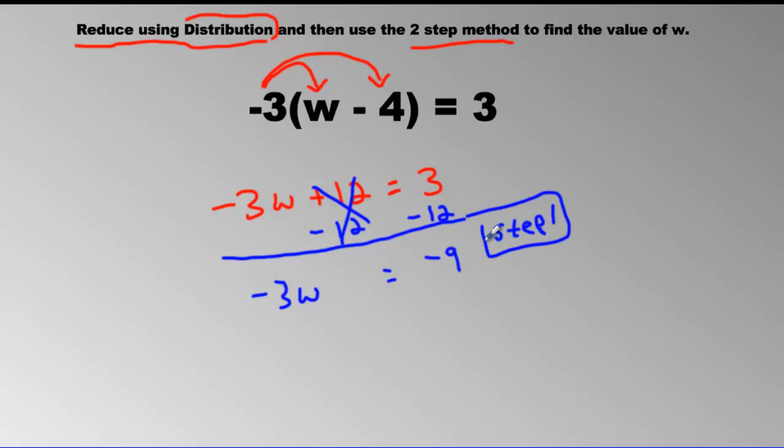Step 1. It's two steps, right? So now we're going to move on to the second step, which is divide by negative 3. Because these are being multiplied. So that cancels the negative and the 3 to make 1 W, which is just W. And then divide this side by negative 3 to make a positive 3. Negative divided by negative is a positive. 9 divided by 3 is 3.